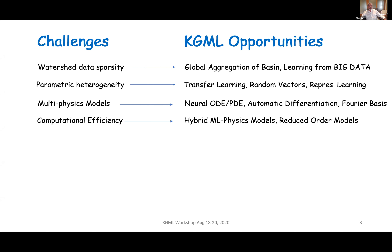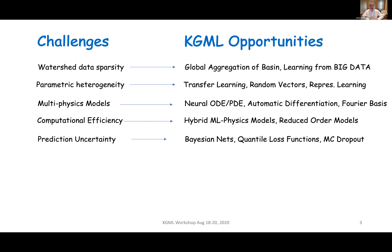Another challenge has always been computational efficiency, particularly for multi-physics models, where some components of the state network are not computationally efficient, or data may be lacking. Two of the talks today will discuss hybrid machine learning models, where physical models are linked with machine learning models to achieve more efficient computation. There will also be one talk dealing with reduced order models. On prediction uncertainty, Bayesian nets will be one approach — there's a talk in this session on that topic. Quantile loss functions and Monte Carlo dropout are a couple of other techniques that show promise.